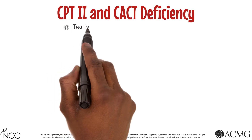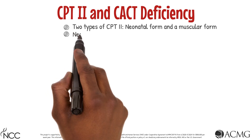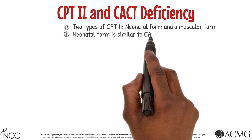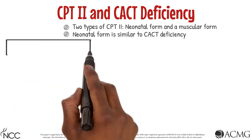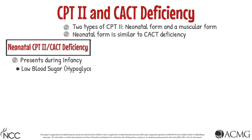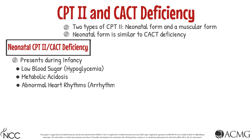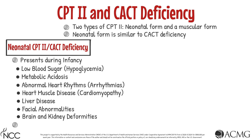There are two types of CPT2 deficiency: a neonatal form and a muscular form. The neonatal form of CPT2 deficiency is similar to that of CACT deficiency. Both can present during infancy. Symptoms include very low blood sugar or hypoglycemia, metabolic acidosis, abnormal heart rhythms or cardiac arrhythmias, heart muscle disease or cardiomyopathy, liver disease, facial abnormalities, and brain and kidney deformities. These infants rarely survive.